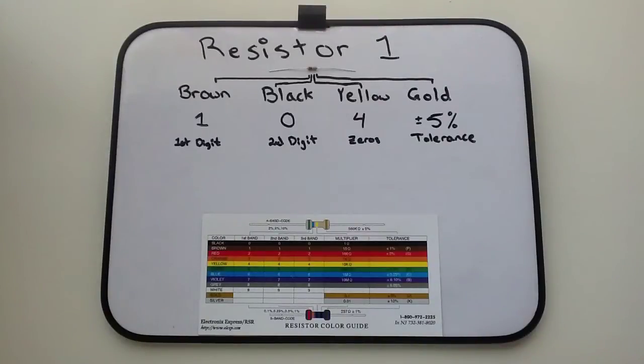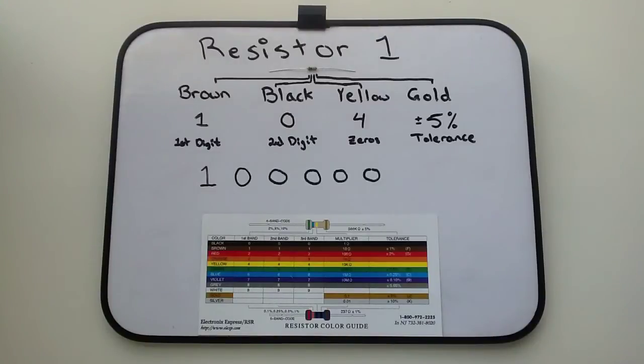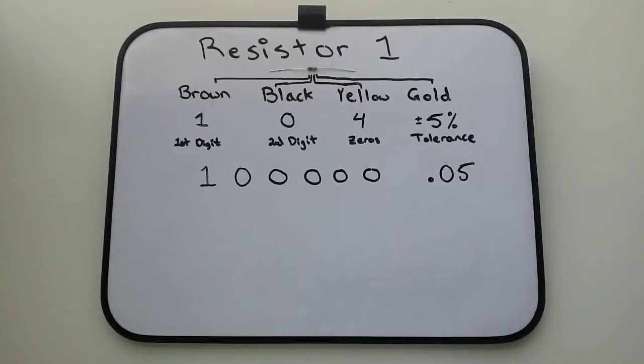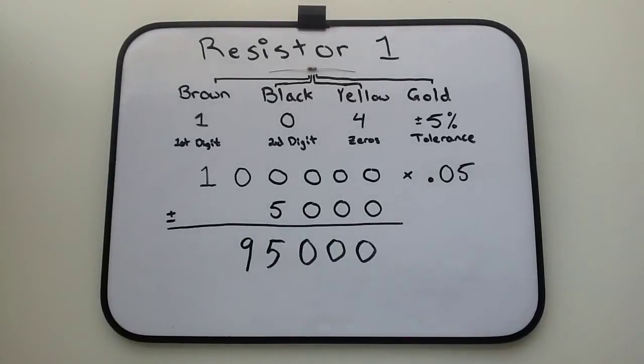The first and second significant digits are 1 and 0. There are four zeros and the tolerance is 5%. The minimum and maximum tolerance for this resistor is calculated by multiplying its resistance value of 100,000 ohms by 5%, which equals 5,000. The 5,000 ohm tolerance value is subtracted from the 100,000 ohm resistance value and added to the 100,000 ohm resistance value.